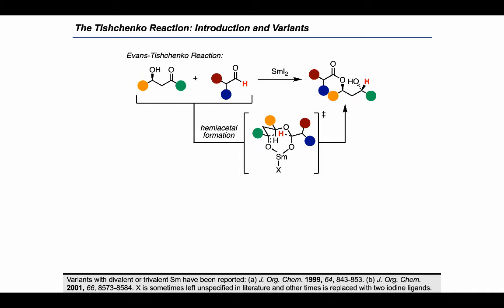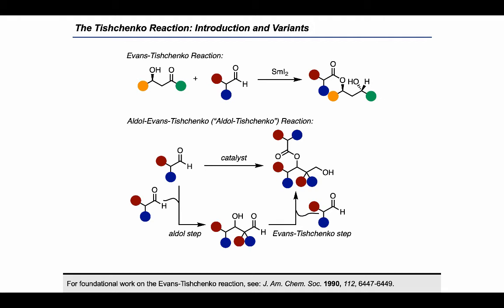One last variant I want to introduce arises from the combination of the aldol reaction with the Evans-Tyshenko reaction — for short, it's often called the aldol-Tyshenko reaction. As the name suggests, it occurs by initial aldol reaction of the aldehyde starting material. This forms a beta-hydroxycarbonyl intermediate that can undergo a subsequent Evans-Tyshenko reaction with a third equivalent of aldehyde to generate the product shown.